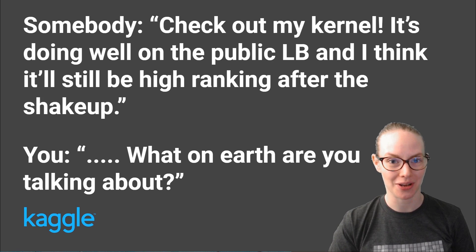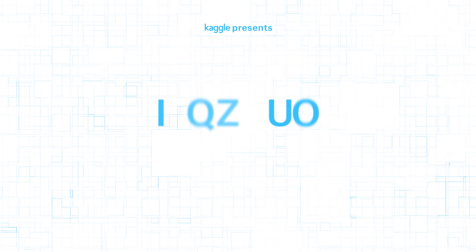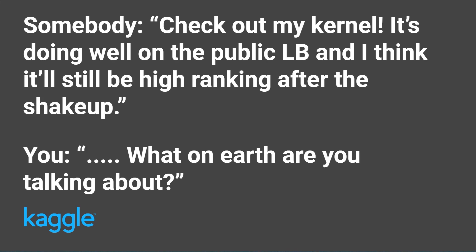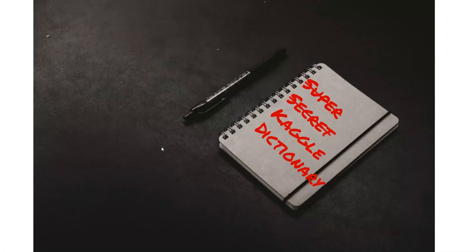Some of the words people use on Kaggle can be pretty confusing, especially if you're new to the community. So I've put together a Kaggle vocabulary guide to help you get started. So you might have heard people say something like this on Kaggle: 'Check out my kernel. It's doing well on the public LB and I think it'll still be high ranking after the shakeup.' And you might have been extremely confused. People who've been on the site for a while have developed their own way of talking. So today I'm going to run you through some of the words you might hear, what they mean, and how to use them.